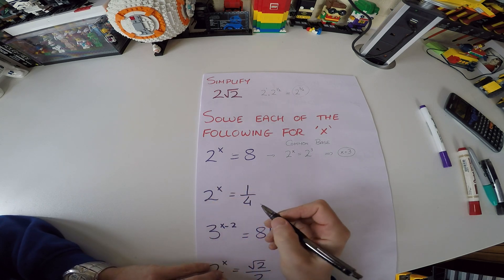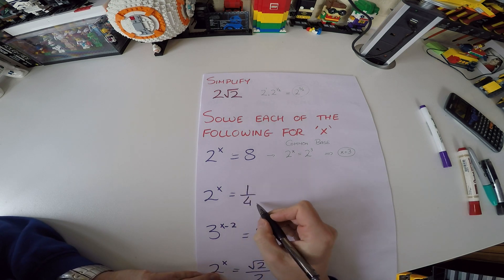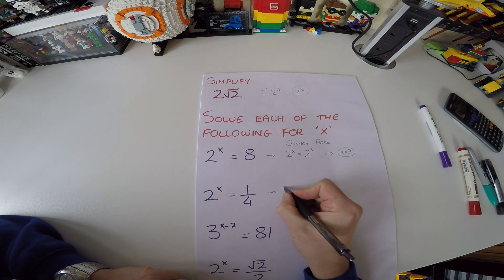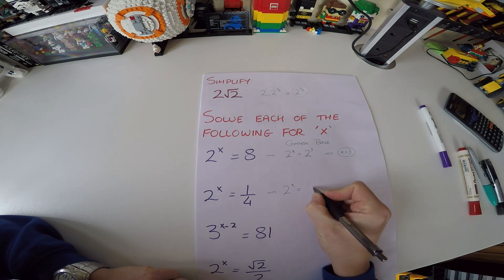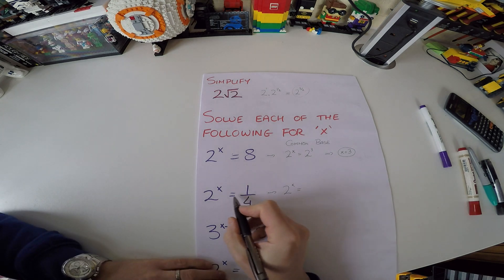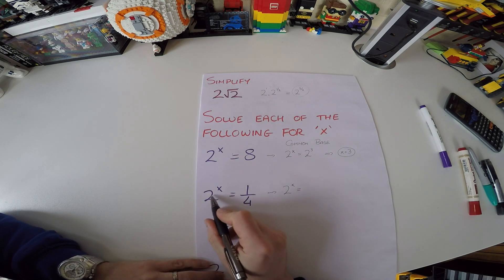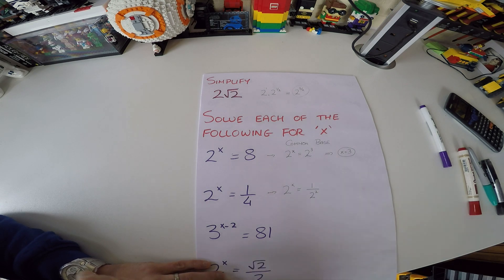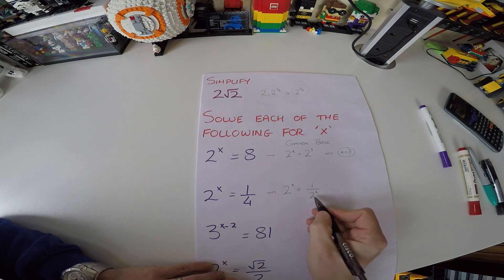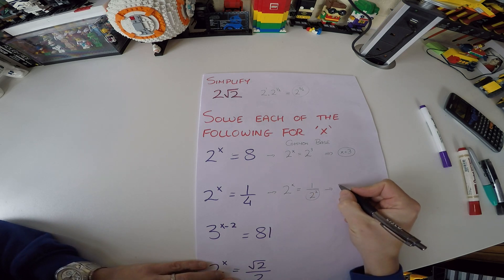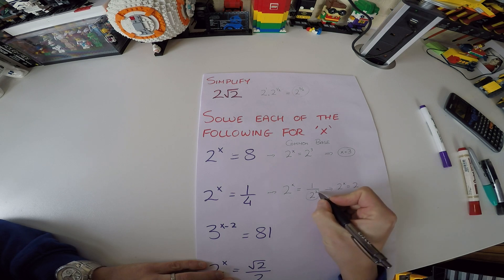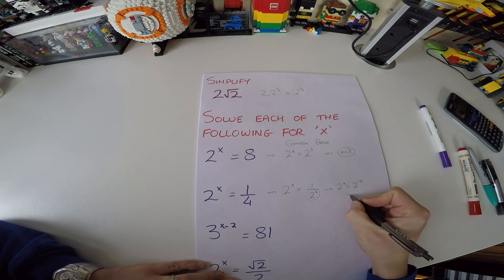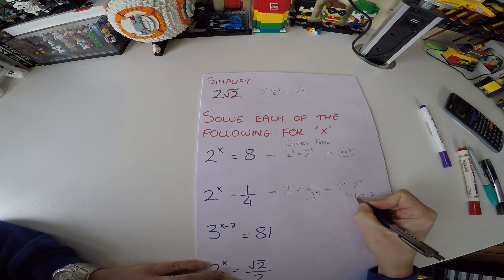They'll all pretty much be the same from here on in, but there'll be some manipulations using the division rule, multiplication rule, and fractional rules. Next: 2 to the power of x equals a quarter. We're looking for a common base again. We can change a quarter to 1 over 2 to the power of 2, then bring it above the line — the power changes sign to minus 2. So x must be minus 2.